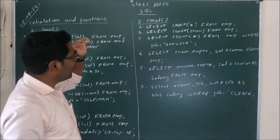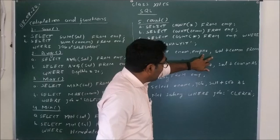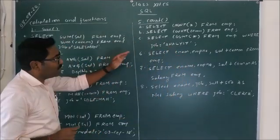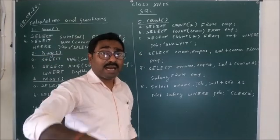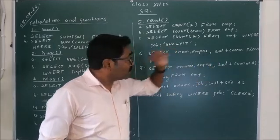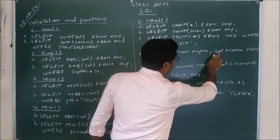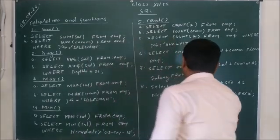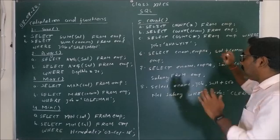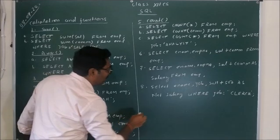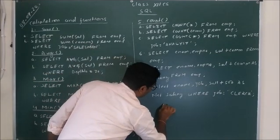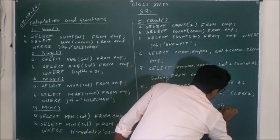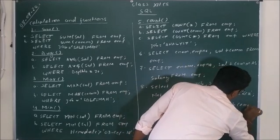In that case, you write: SELECT ename, empno, sal + commission FROM EMP; This will display three columns: ename, empno, and sal + commission. For example, if an employee has EMP number 2750, salary of 700, and commission of 50, then in the sal + commission column it will display 750. Whatever the values are, the sum of salary and commission will be displayed for each row.